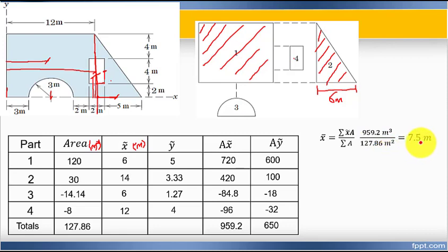Y-bar equals summation of y-tilde times area divided by summation of area. This value equals 650 meter cubed divided by 127.86 meter squared, which equals 5.08 meters.